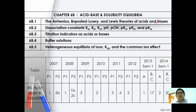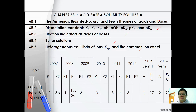We're also going to learn about dissociation constants Ka, Kb, Kw, what is pH, pOH, pKa, pKb and pKw, titration indicator as an acid-base, buffer solution and finally heterogeneous equilibrium of ions, Ksp and common ion effects.